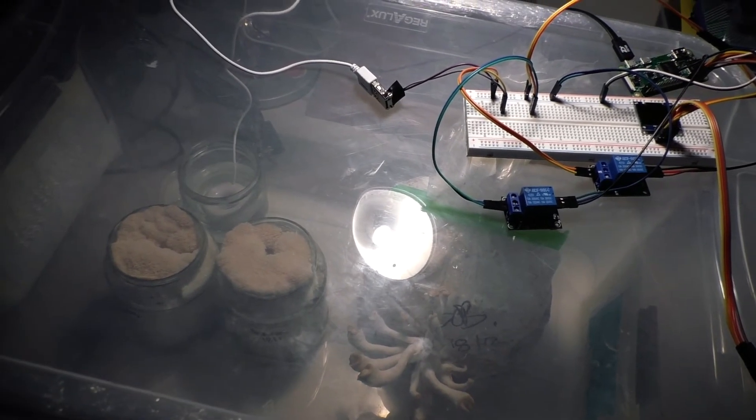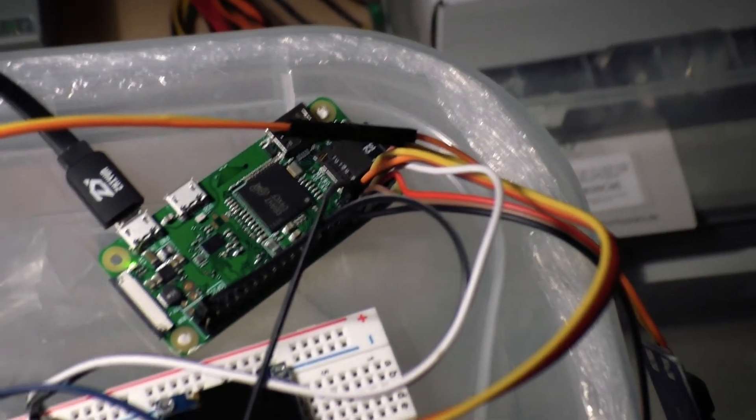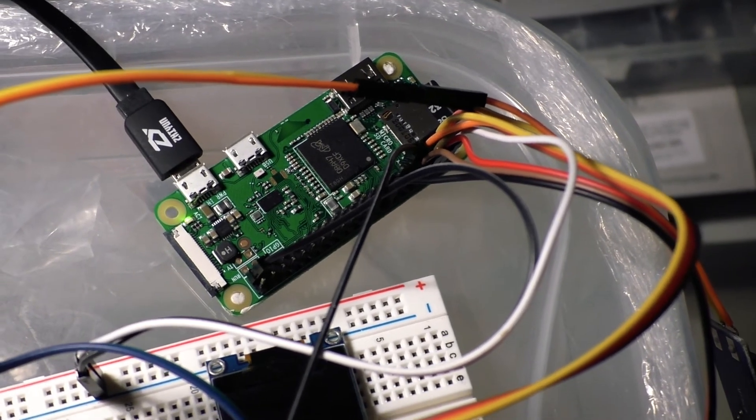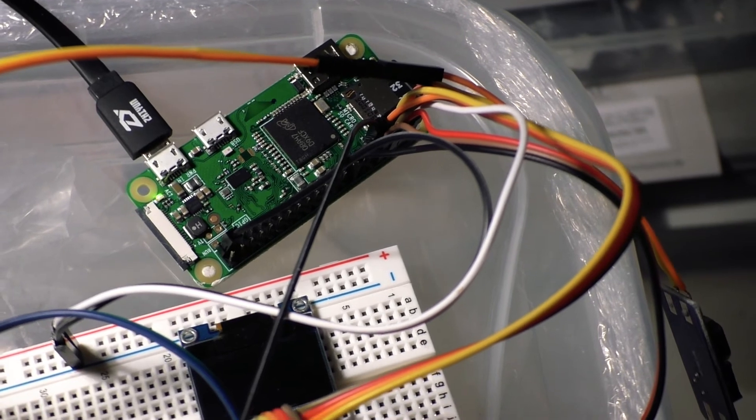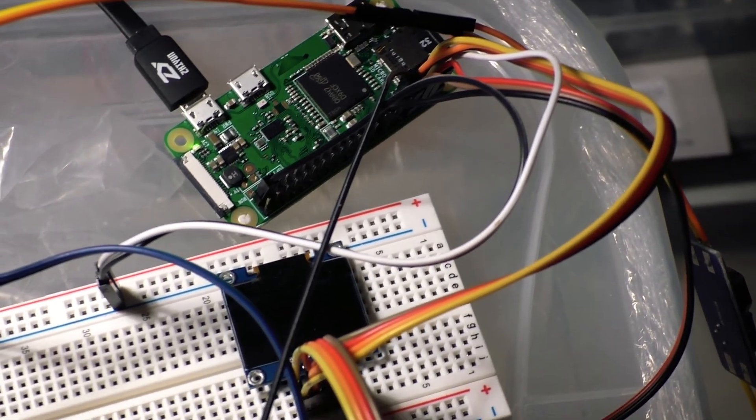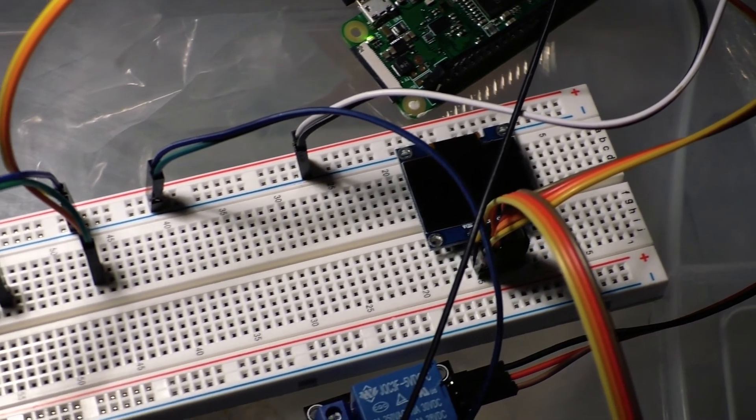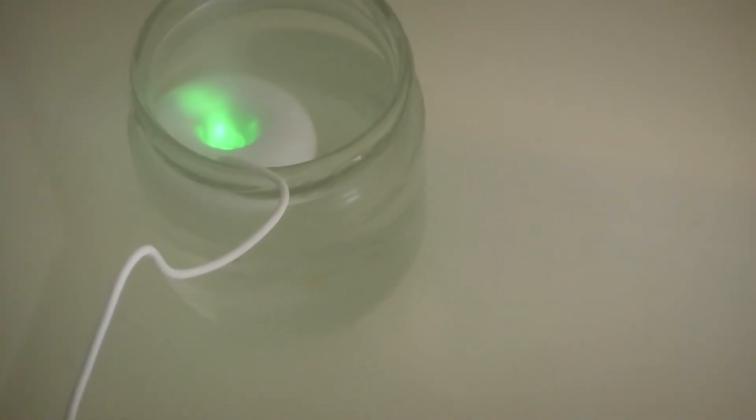The heart of the electronics is a Raspberry Pi Zero that takes readings from a sensor that reads the temperature, humidity, and CO2 levels. The Raspberry Pi also provides 5V power via a relay to a USB humidifier and through another relay to a computer fan which does the fresh air exchange.